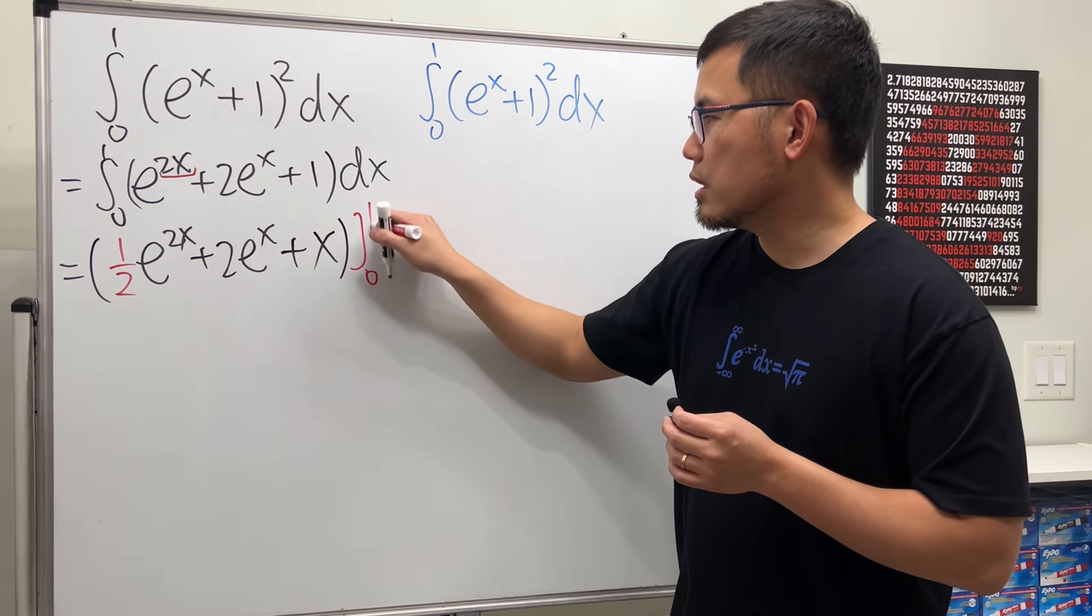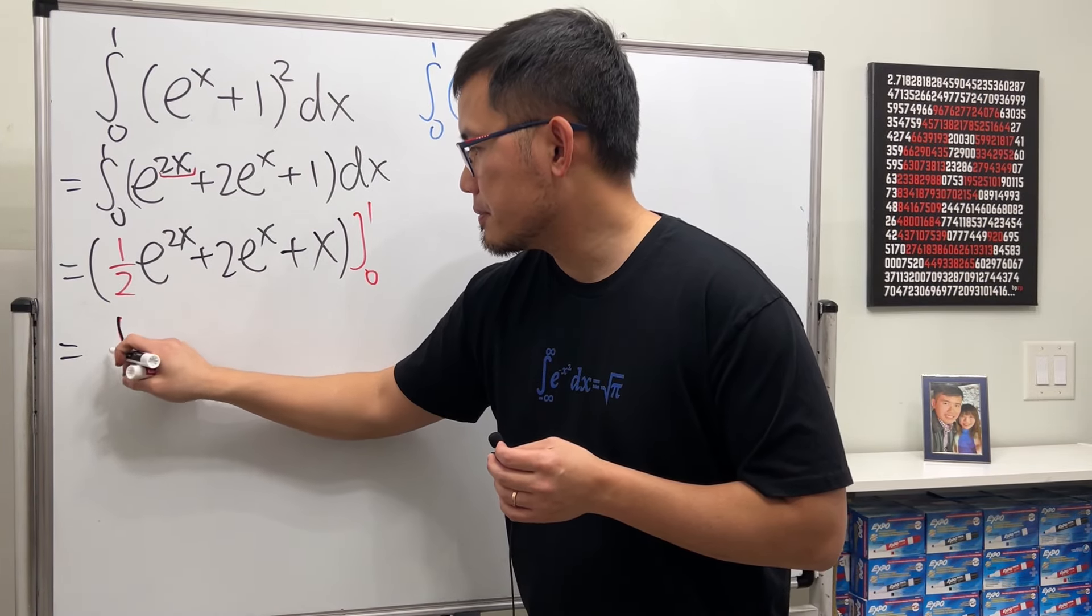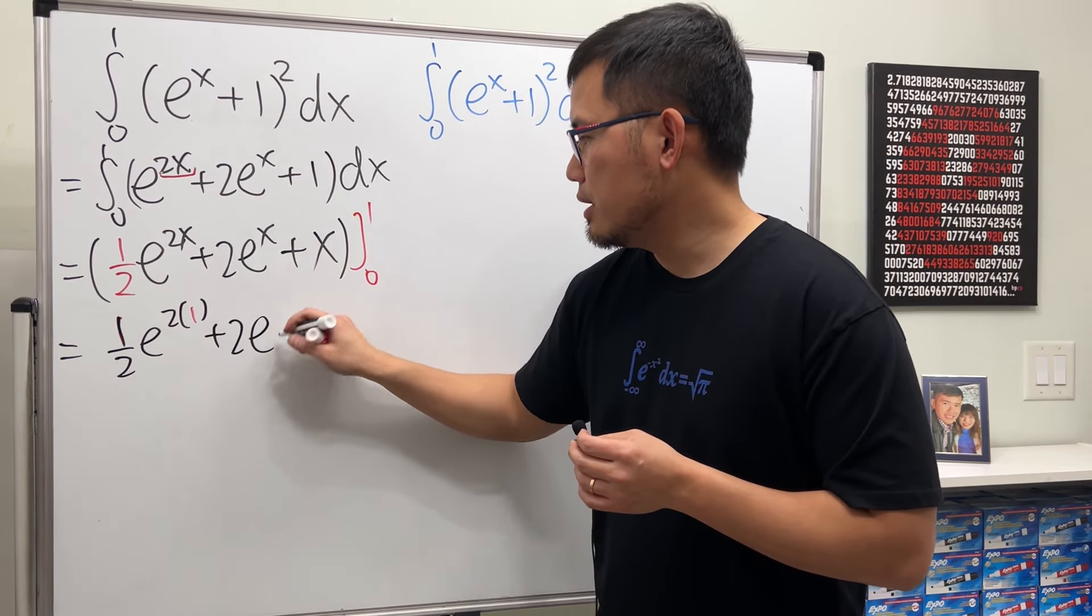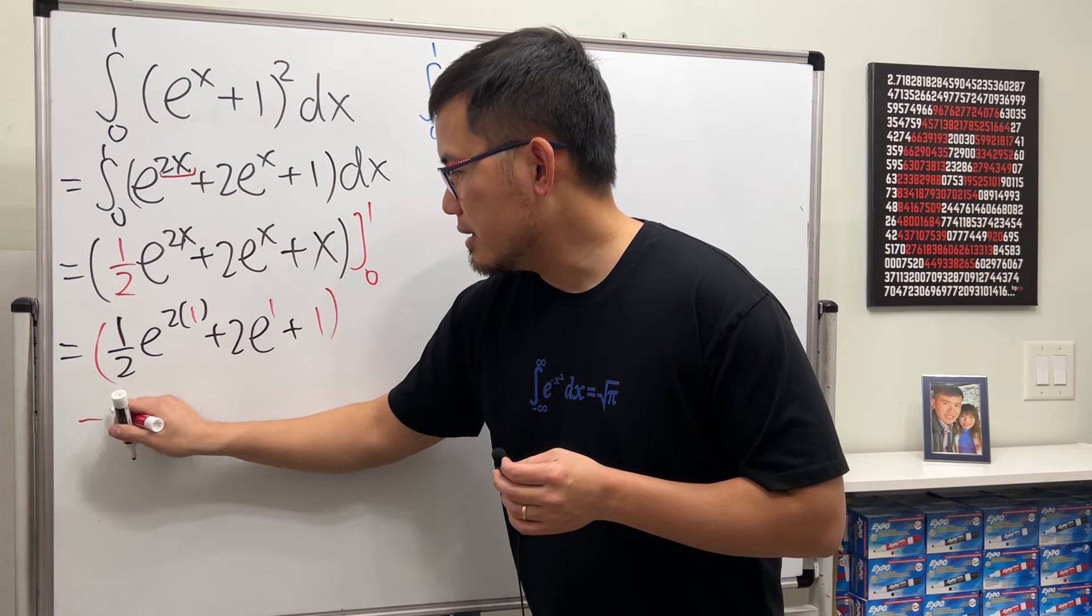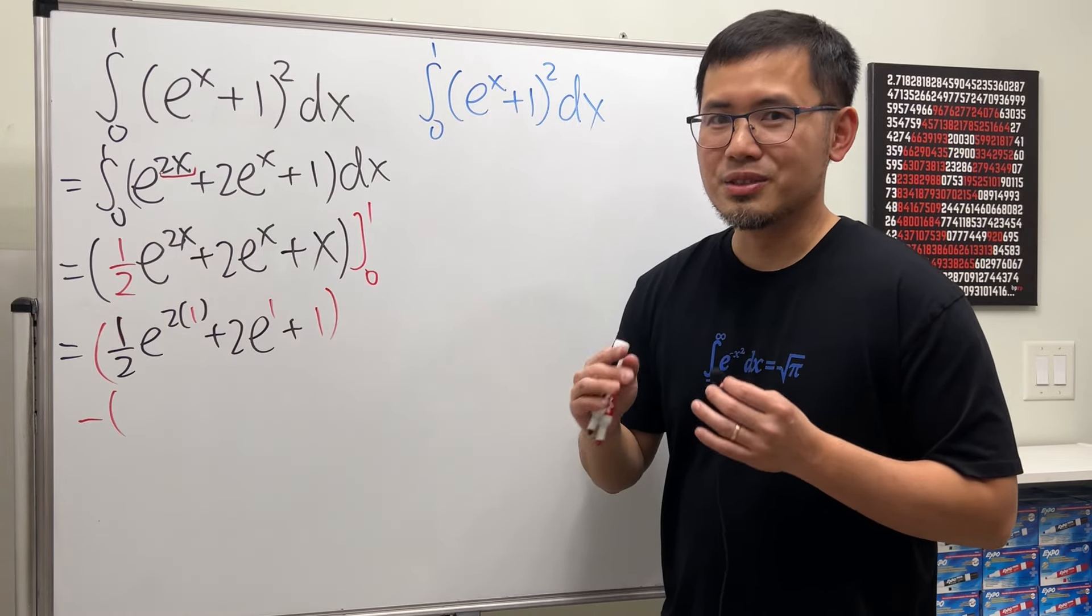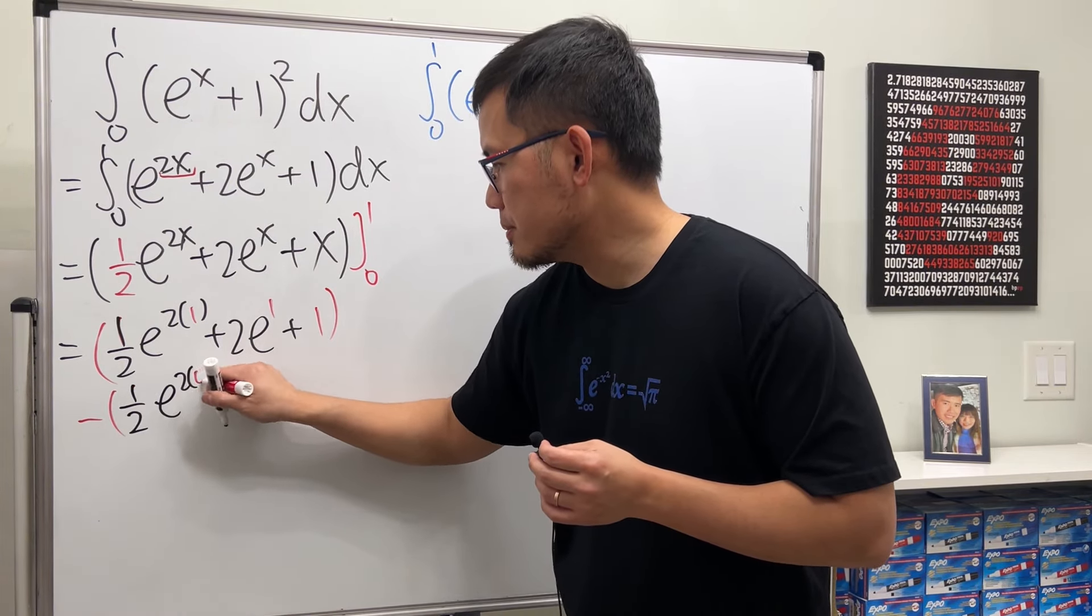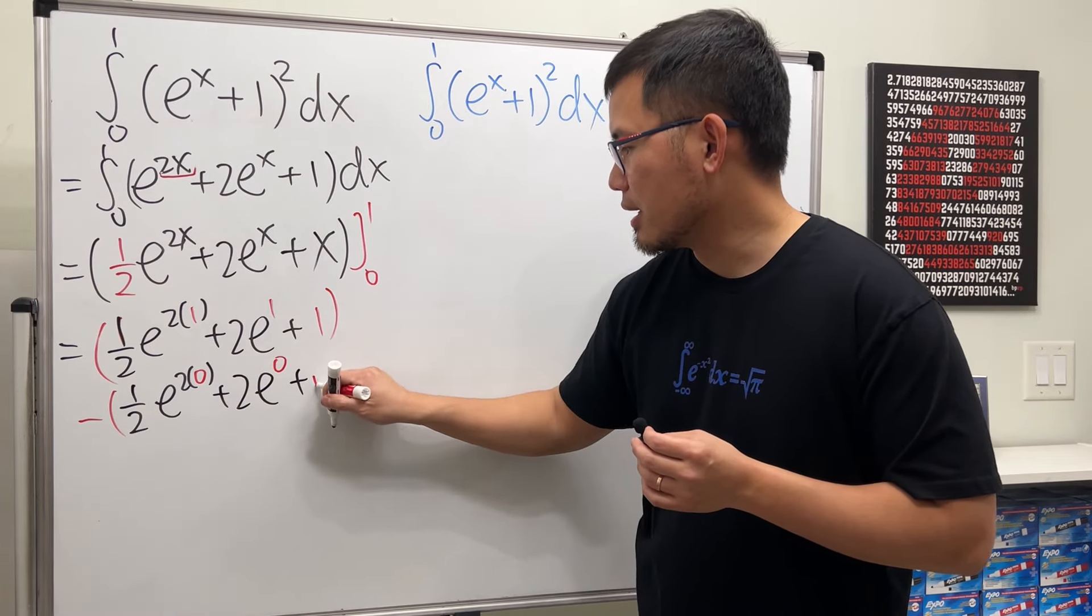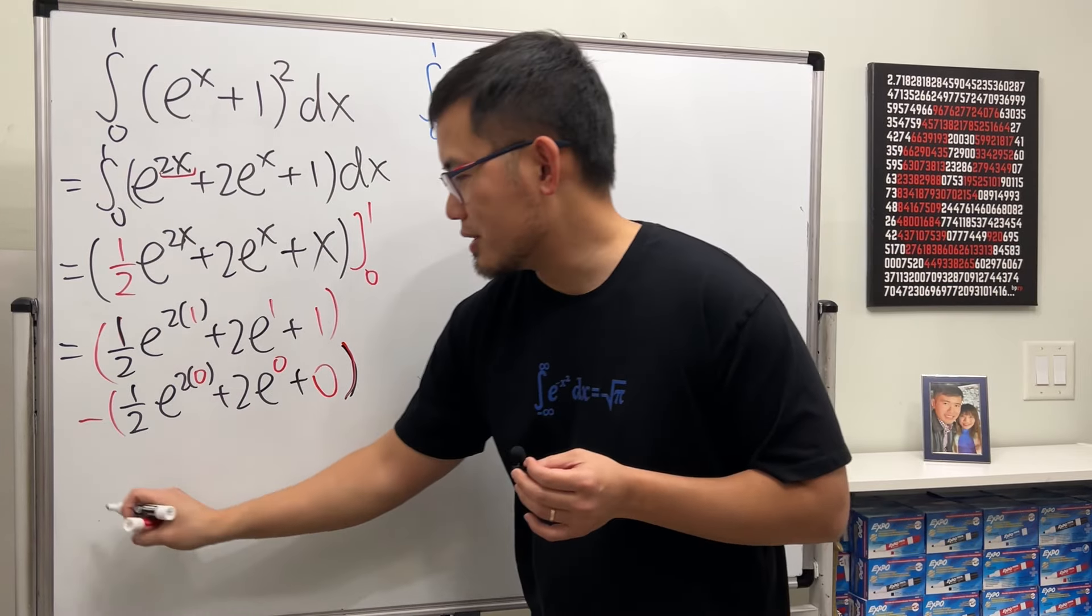Now we just have to plug in numbers. The 1 goes in first. So we have 1 half times e to the 2 times 1, and then plus 2e to the first, and then plus 1. This is the first part. And then minus the second part. Make sure you also plug in 0, because e to the 0 is 1, so it matters. So we have 1 half e to the 2 times 0, plus 2e to the 0, and then plus 0. Let's just finish this, work this out.